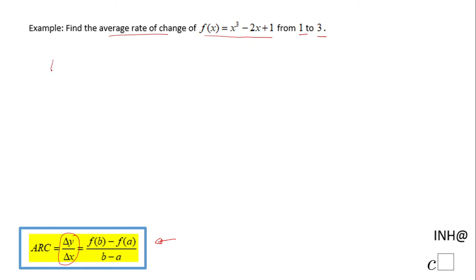In our case, we're going to have f(3) - f(1) over 3 - 1. So we have to evaluate f(3), which in this case will be 3³ - 2 times 3 + 1.